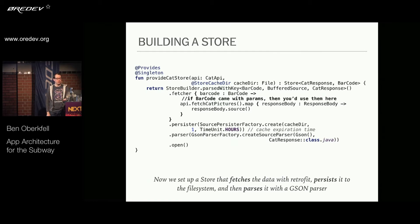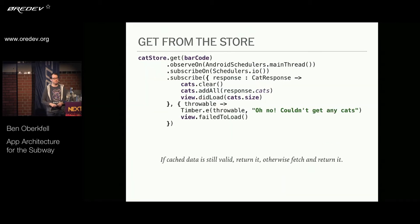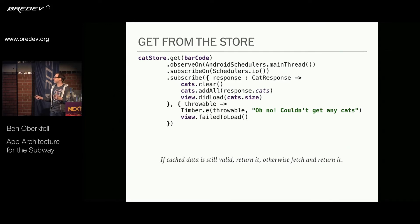Once we have the Store, how do we use it? There are two methods: get and fetch. In our presenter, we call get for a barcode, subscribe on the response, add those to the internal list backing our RecyclerView, and call our view didLoad method. If there's an error, we log it. If there's cached data, it returns it; otherwise it does a fetch and gives you that. For a pull to refresh, you call fetch — same interface, just get versus fetch.